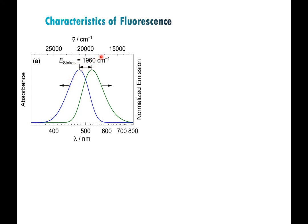The Stokes shift must correspond to the same electronic transition — absorption S0 to S1 and fluorescence S1 to S0. When reporting a Stokes shift, many people in the literature use nanometers, but that's not ideal because wavelength is not directly proportional to energy. A 30 nm Stokes shift between 300 and 330 nm represents a very different energy gap than a 30 nm shift between 600 and 630 nm. It's better to report in wavenumbers or energy units for an apples-to-apples comparison.